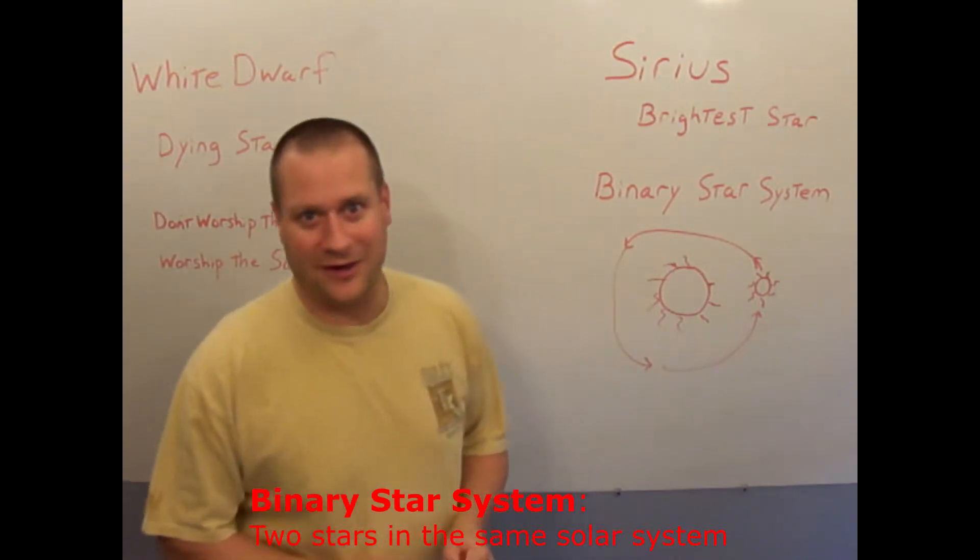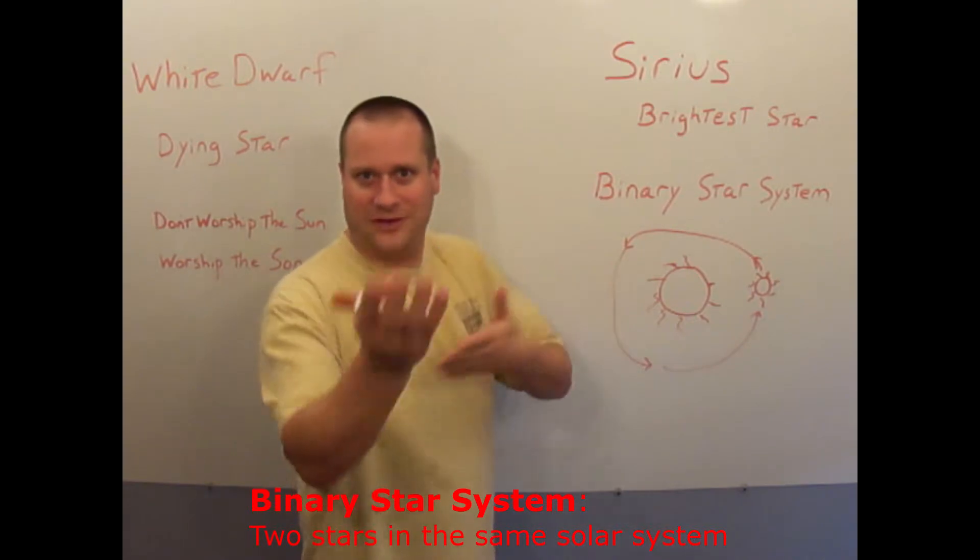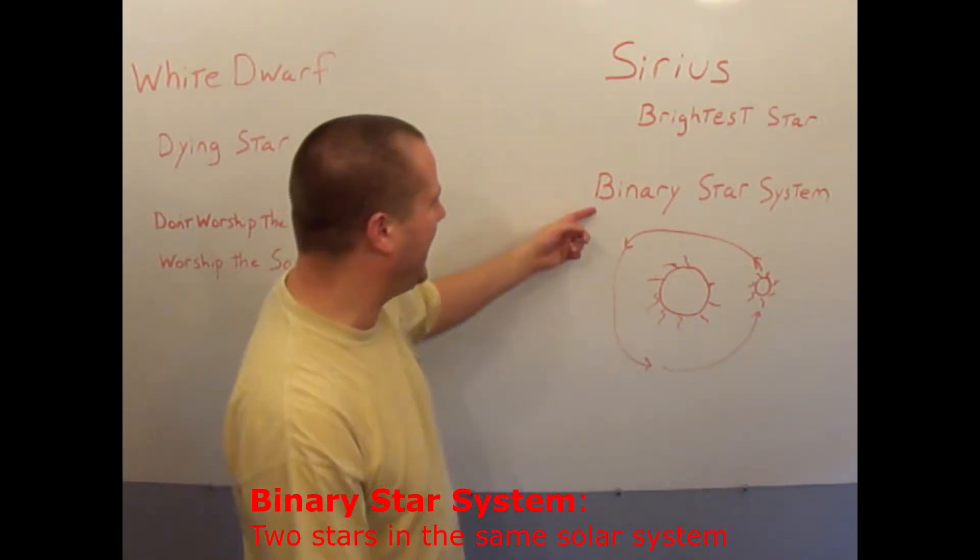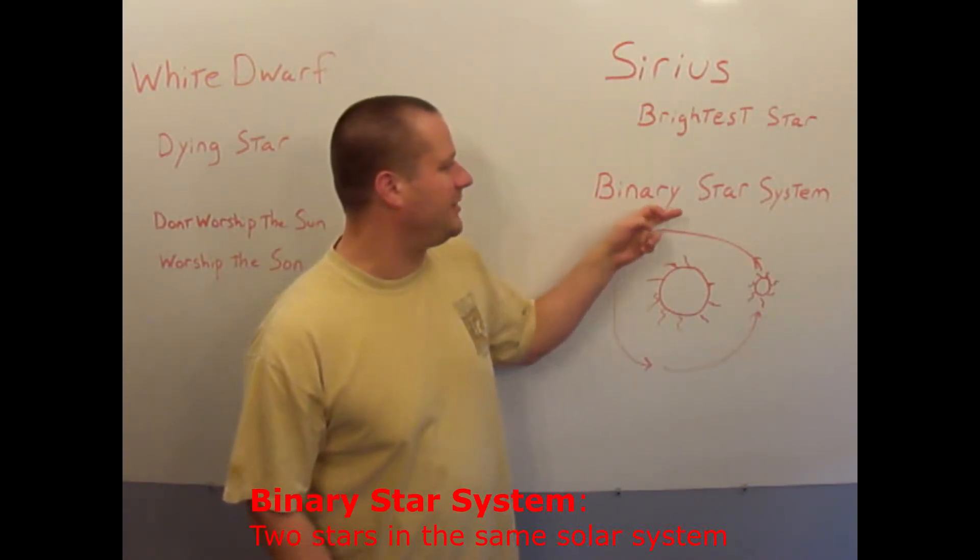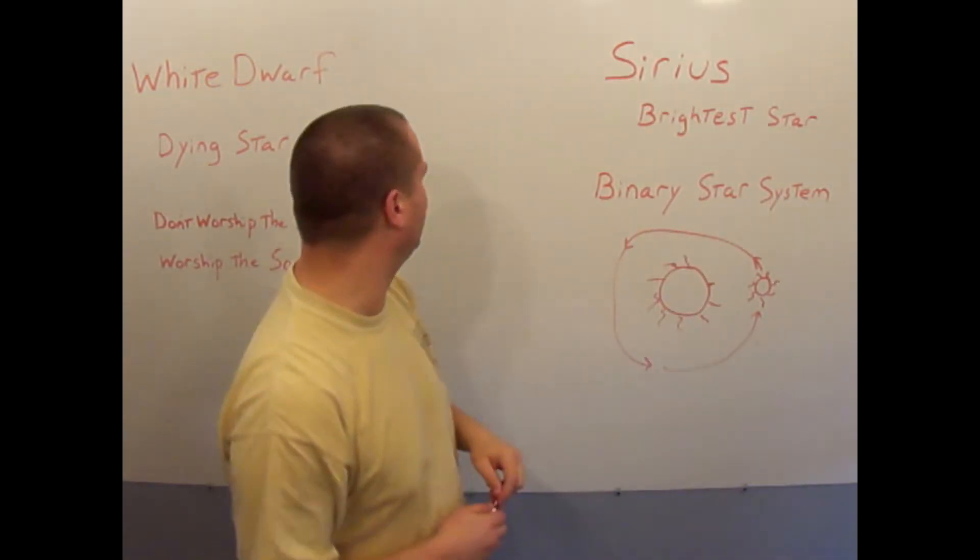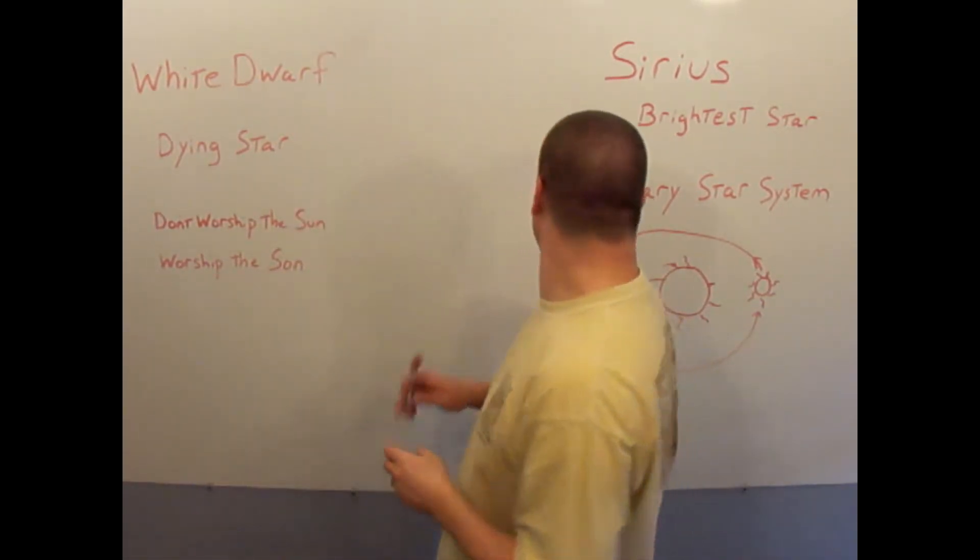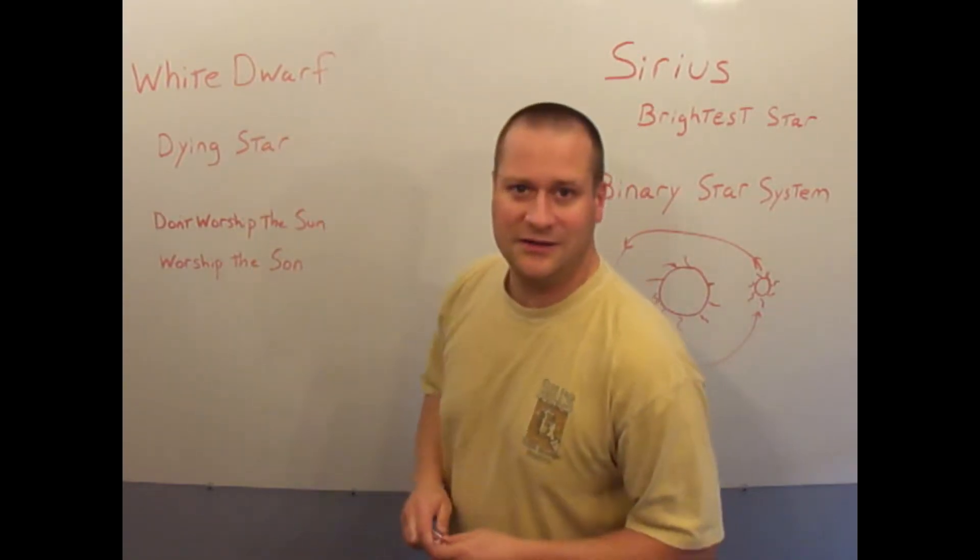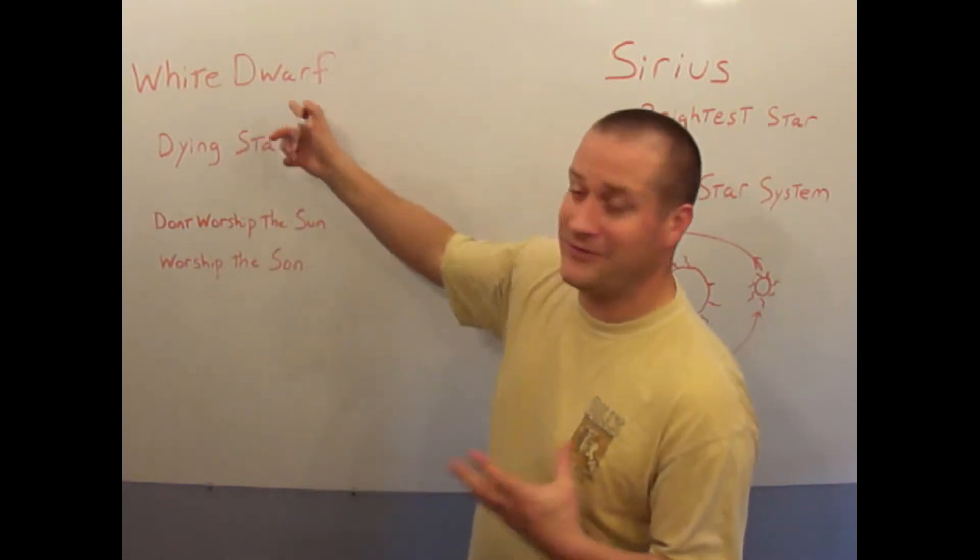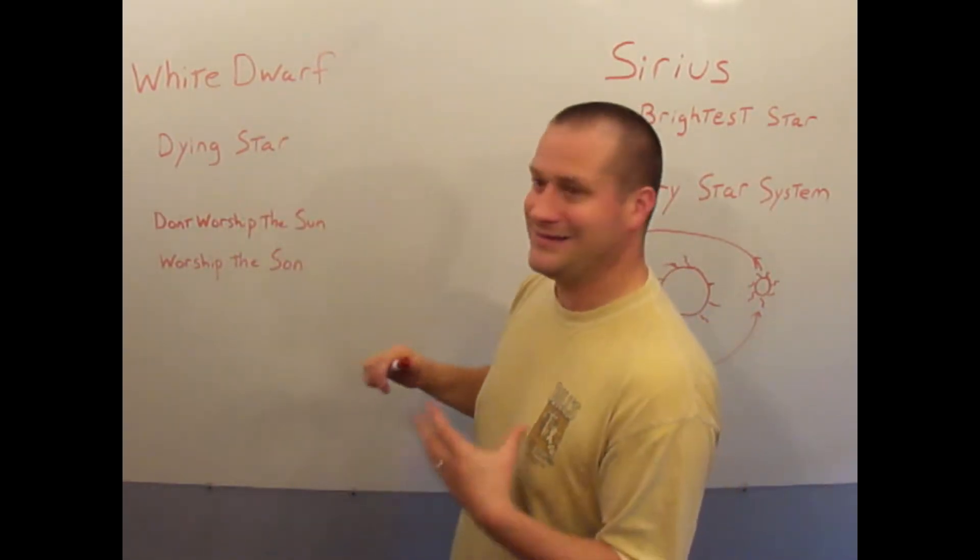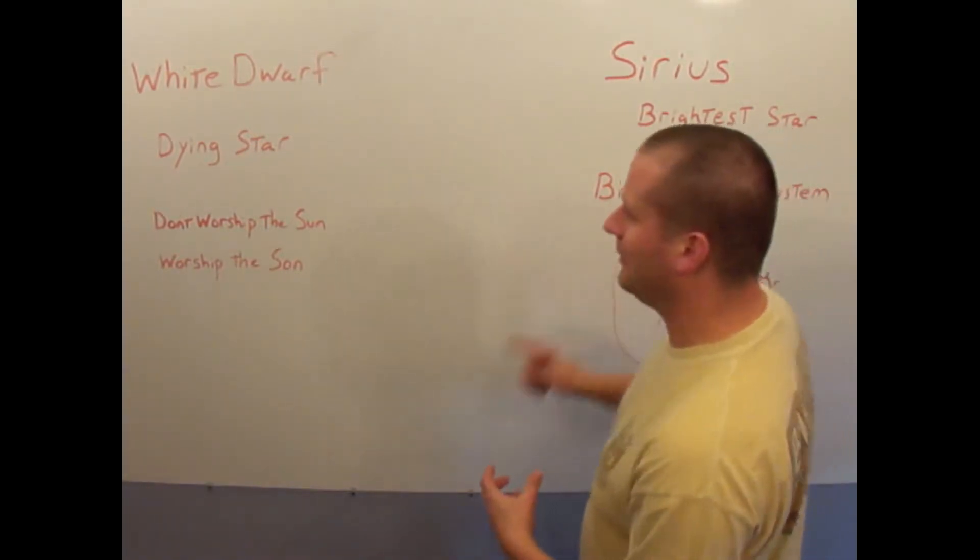This is called a binary star system. Binary means two. So hold on to that for your vocabulary. Binary star system is two stars, one little one revolving around another. The little star is actually called a white dwarf. A white dwarf is a type of star that is dying. So this little star here is in the process of dying as it goes around the big one.